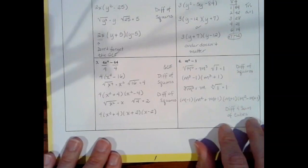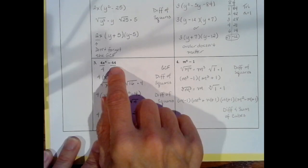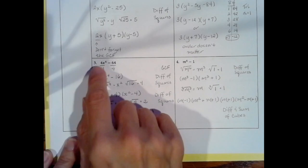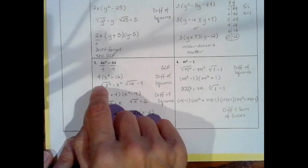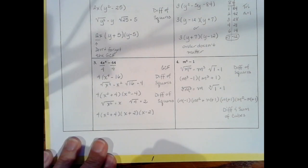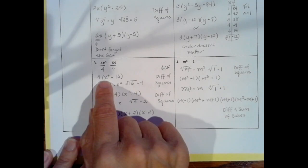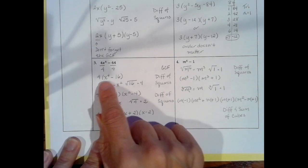Problem number 3 is 4x⁴ minus 64. We have two terms. The smallest number is 4, and 4 divides into both 4 and 64. So I can factor out a 4. I cannot factor out an x variable because 64 doesn't have a variable. 4 divided by 4 is 1, leaving x to the 4th. 64 divided by 4 is 16. So I have x to the 4th minus 16 in parentheses.